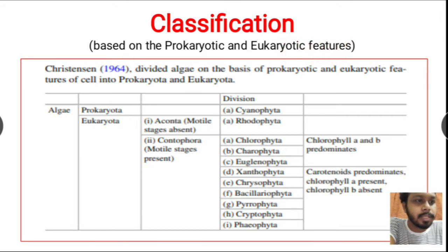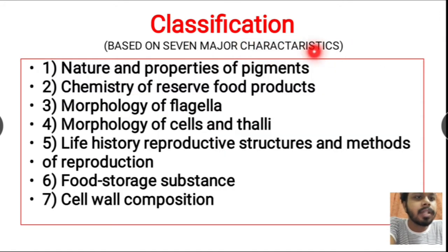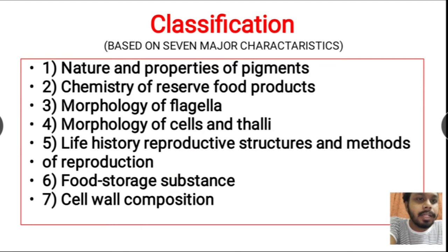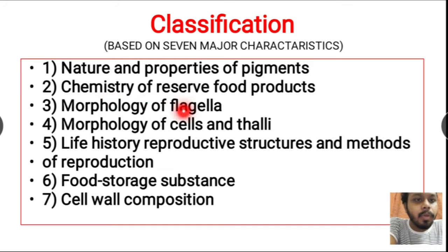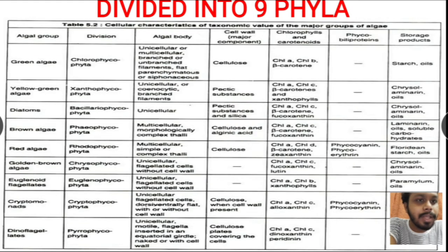The next classification is based on major characteristics. Depending on seven characteristics, algae are differentiated into nine classes or nine phyla. Those characteristics are: nature and properties of pigments, reserve foods, morphology of flagella, morphology of cells, reproductive structures, food storage substances, and cell wall composition.